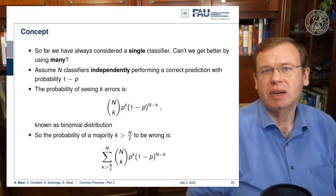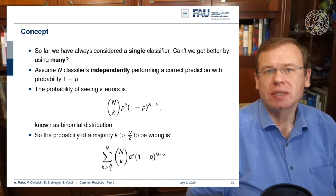If we assume N classifiers that are independent, performing a correct prediction will be at a probability of 1 minus p. Now, the probability of seeing k errors is N choose k times p to the power of k times 1 minus p to the power of n minus k. This is a binomial distribution. So the probability of a majority, meaning k greater than n over 2, to be wrong is the sum over N choose k times p to the power of k times 1 minus p to the power of n minus k.